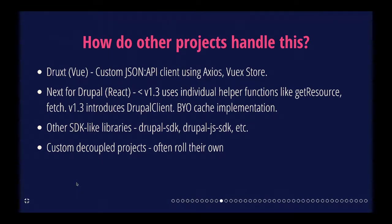That seemed like a reasonable ask and something that, as a JavaScript developer, I could just npm install something that solves my problem. At the time, it really didn't appear to be quite that easy. Looking at other projects in the community — for example, Druxt, which is a Vue-based project, has its own custom JSON API client using Axios and the Vuex store. Next for Drupal, prior to the 1.3 release, had a bunch of individual helper functions. There were other SDK libraries like Drupal SDK and Drupal JS SDK. On custom decoupled builds, people just roll their own — writing their own fetch methods, their own state handling — a lot of solving this problem over and over.